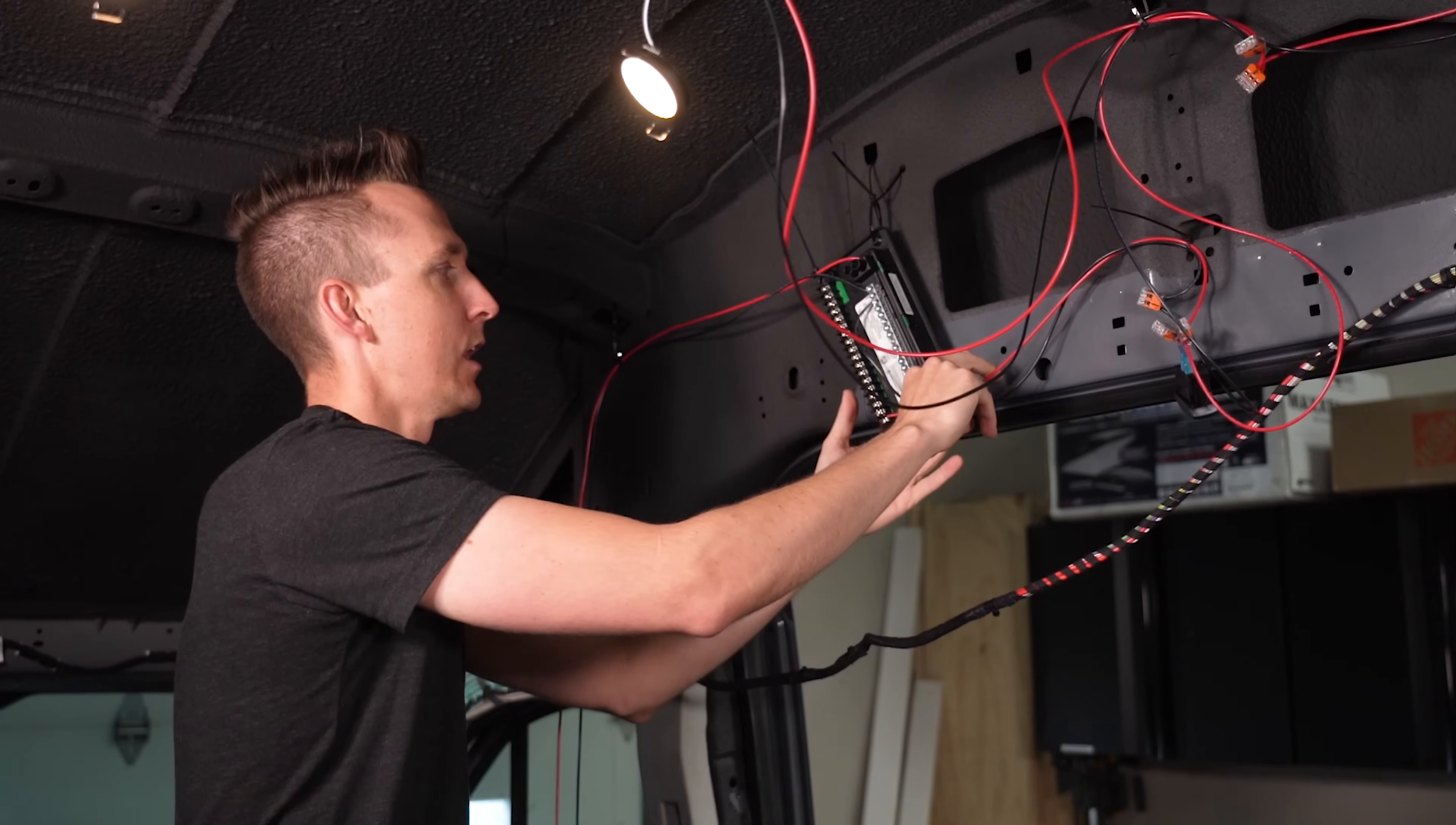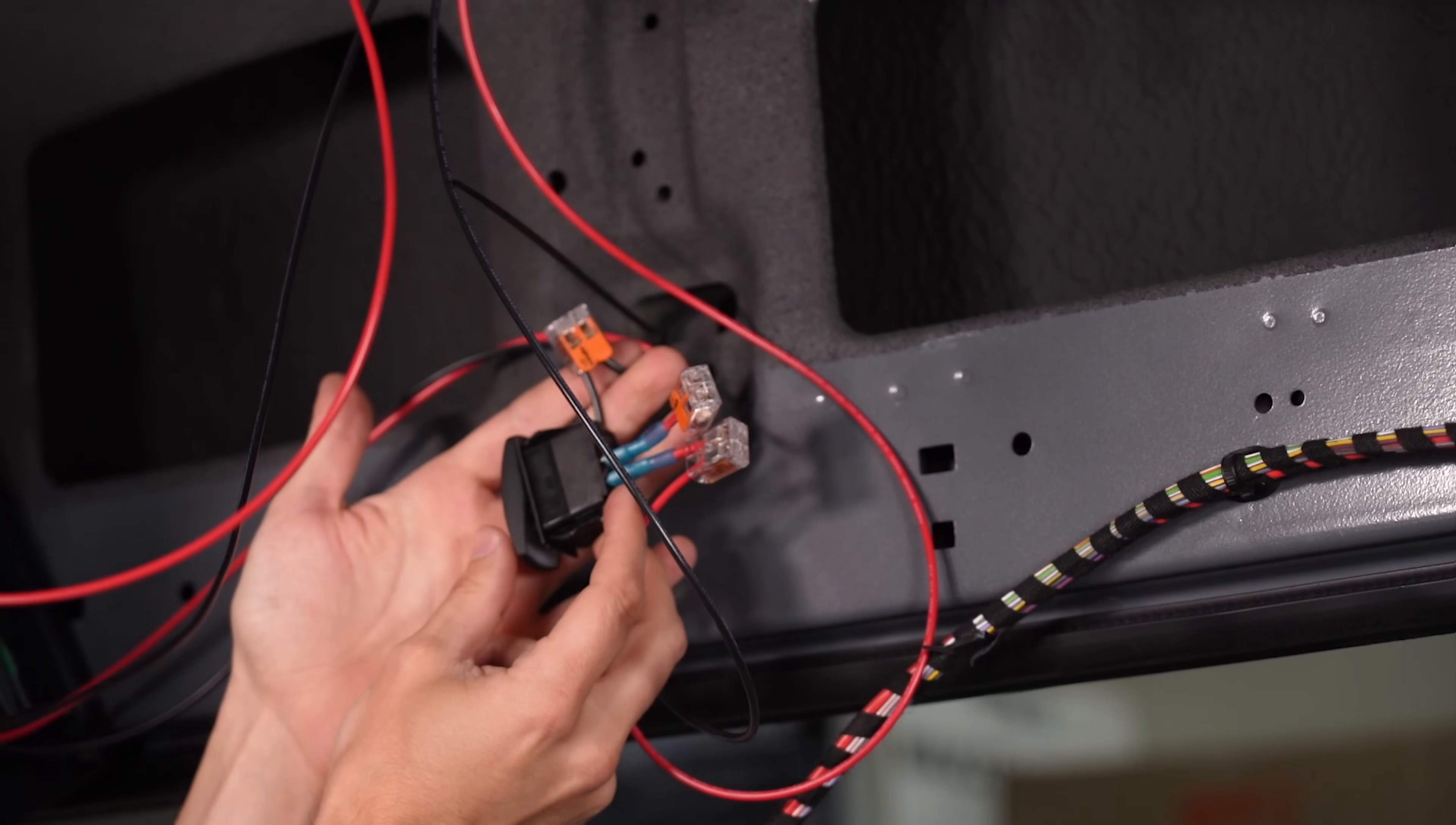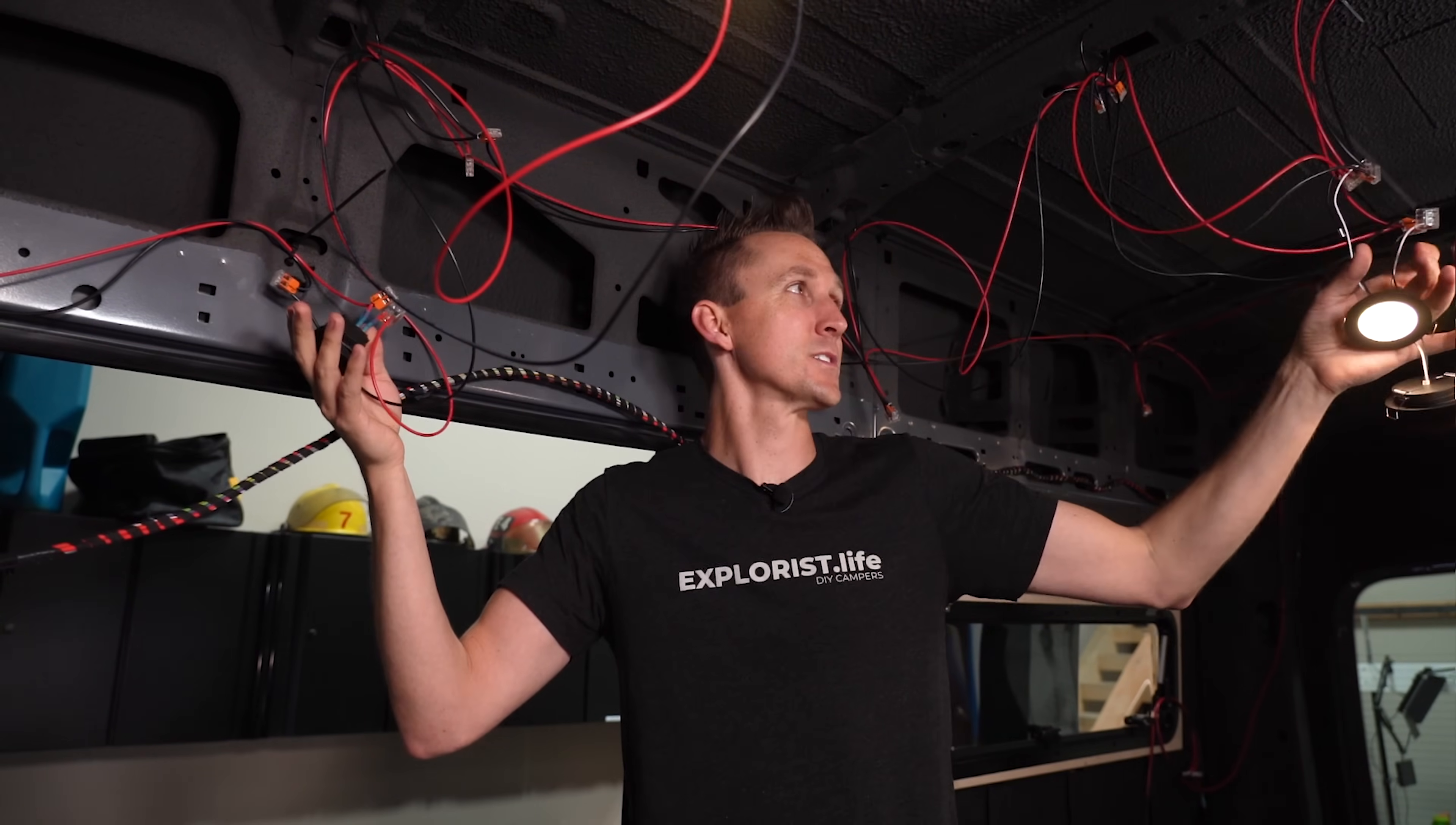Positive and negative wires coming off of the back of the fuse block to the switch right here. Switches will live in a switch panel that'll be right here above the door, and that's where all of the switches for our inside lights will be. From our switch here, we have our positive and negative wires going off to all of our puck lights, and the lights are indeed actually working, which is always good.